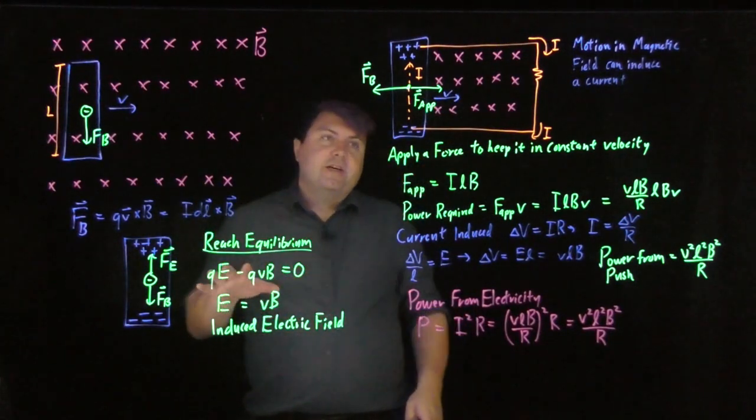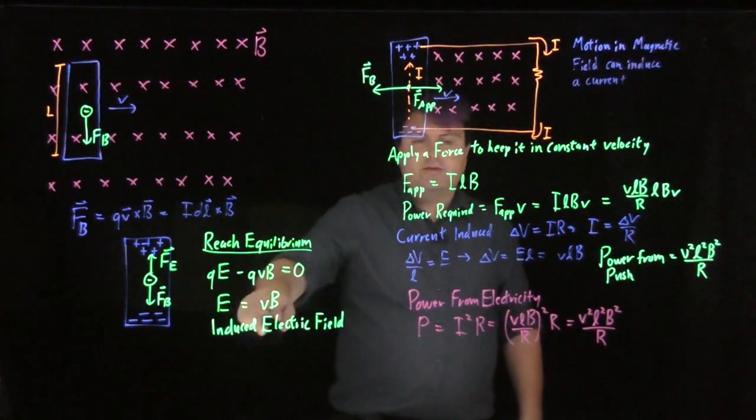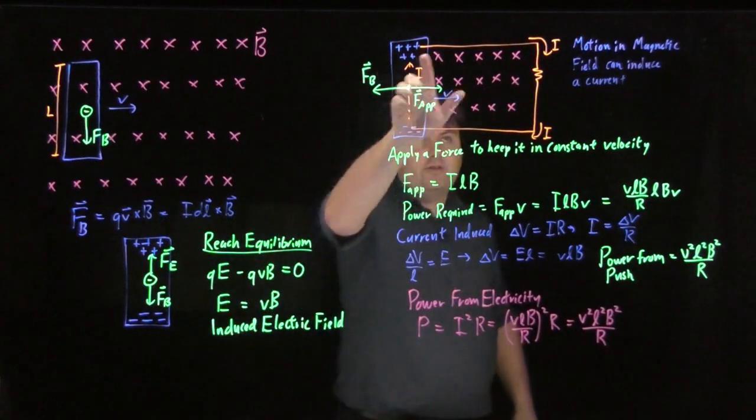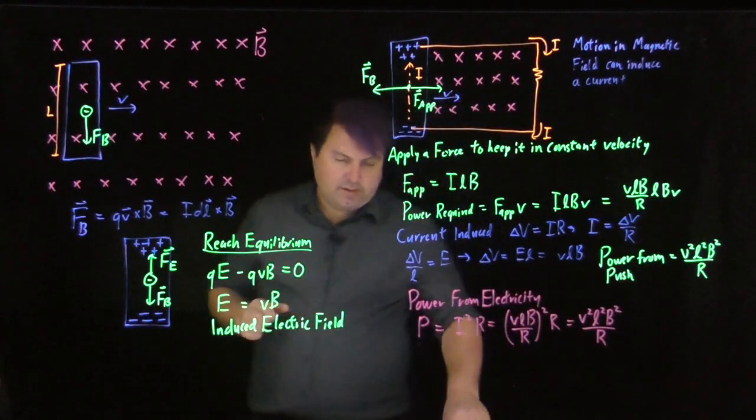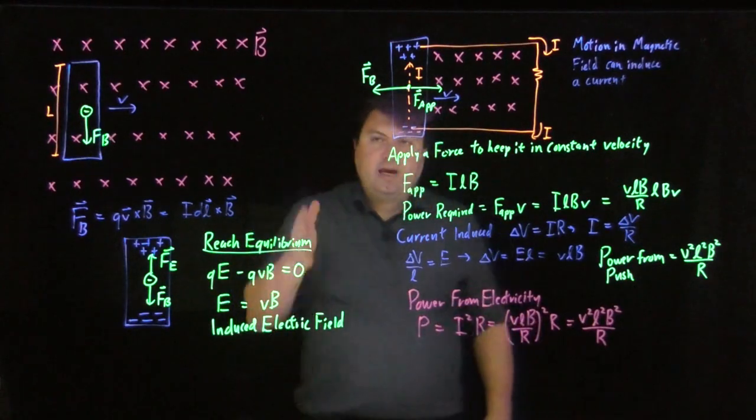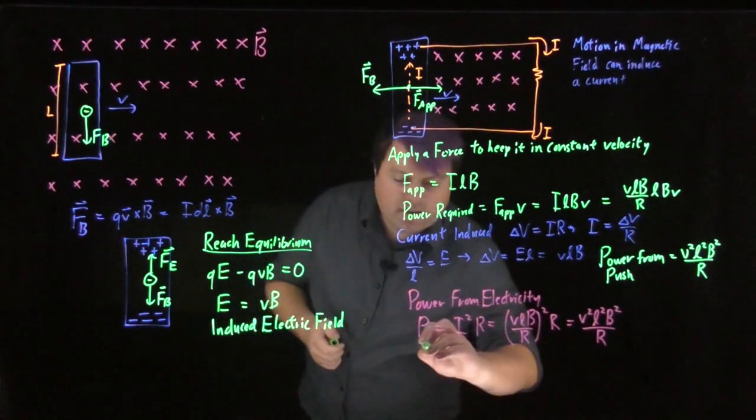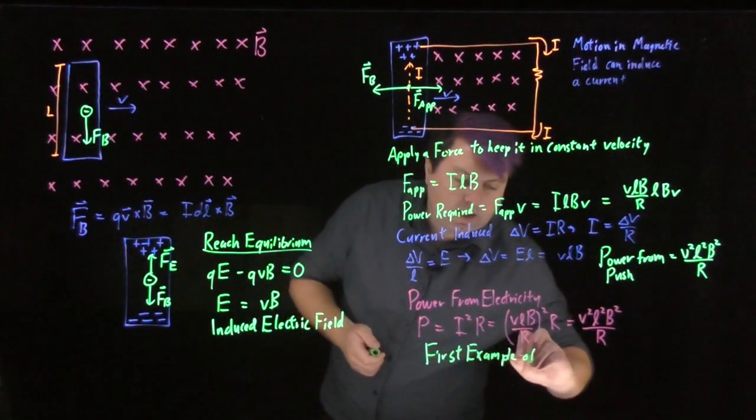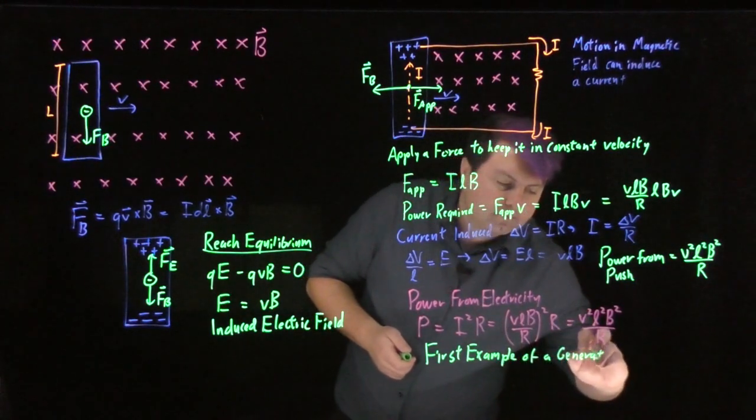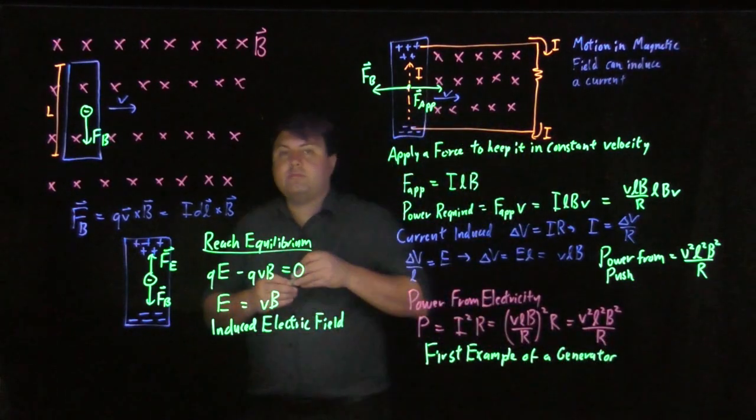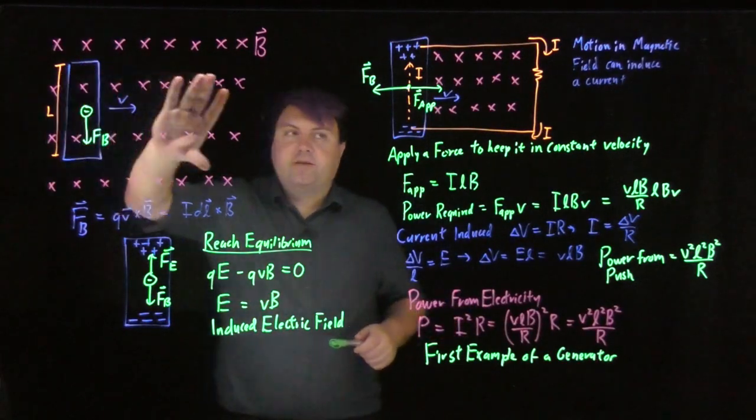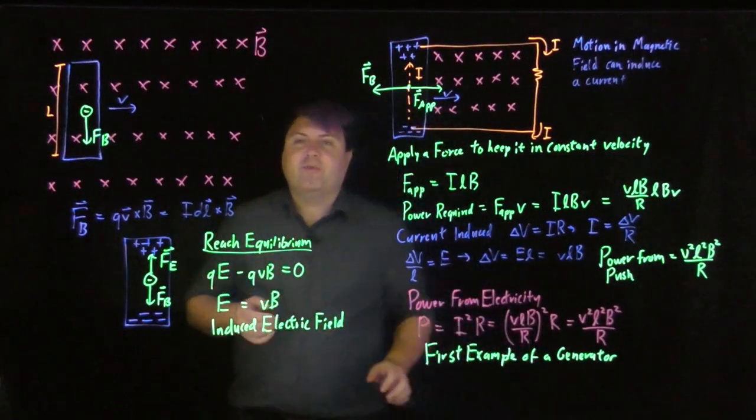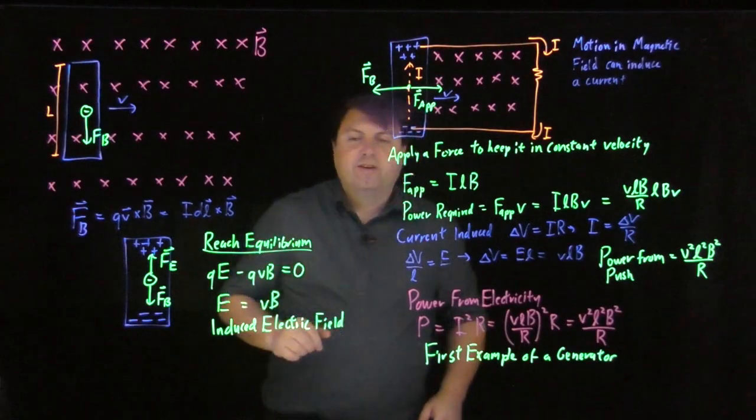But much more importantly than this, these induced quantities, this induced electric field, this induced current, this induced voltage, they are a way to generate electricity through mechanical means. So we're converting mechanical energy into electrical energy. And this is our first example of a generator. So moving conductors in magnetic fields is a way to generate electrical current, electrical energy, and we'll look at more into this with all of these induced quantities.